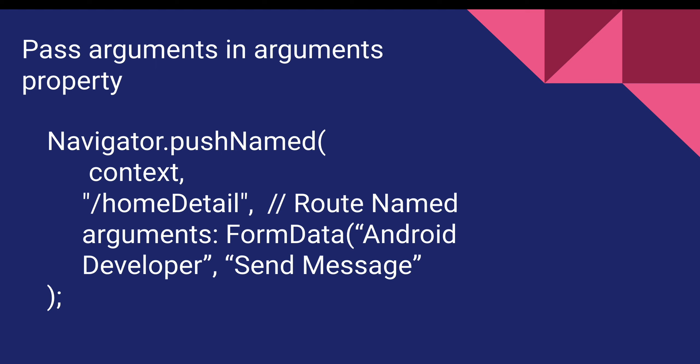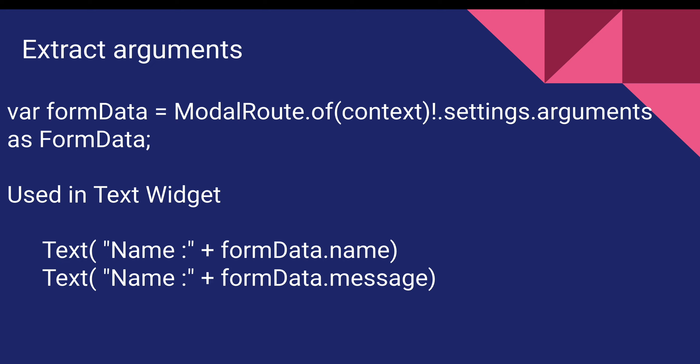You can see in this slide I will pass this FormData in the argument property of the navigator.pushNamed method. In the second screen, we are going to use the ModalRoute to extract the argument and cast it to what we have sent. In ModalRoute there is a property called settings, and in settings there is another property which is arguments. In this argument, you will get what you have sent from one screen to another screen, and you have to cast it as FormData. I have used this FormData in a Text widget using formData.name and formData.message.